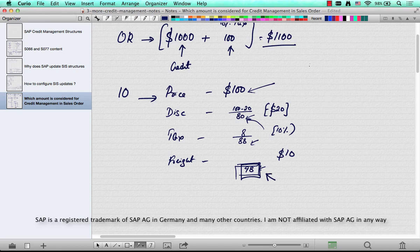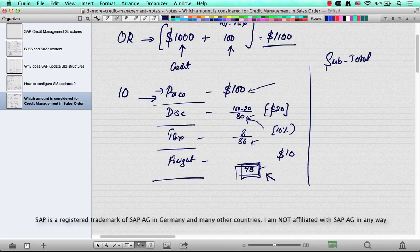That's using what's called a subtotal. In your pricing procedure, there's a pricing section and then discounts and taxes, freight, etc. And then there's a column called subtotal. The moment you assign a subtotal of A, that means that amount is considered for credit price.